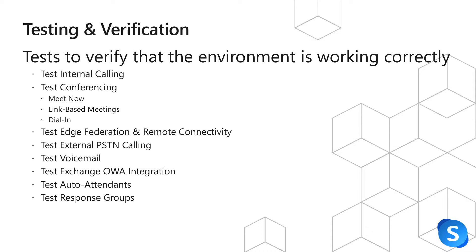Next, we need to go ahead and test that external PSTN calling is working for the environment. To do this, just simply pick up one of your phones and dial a number outside of your environment and make sure that the call does go through. Also test voicemail — call into yourself from another phone, or call from one phone to another user and don't pick up on the other line, and verify that you can leave a voicemail.